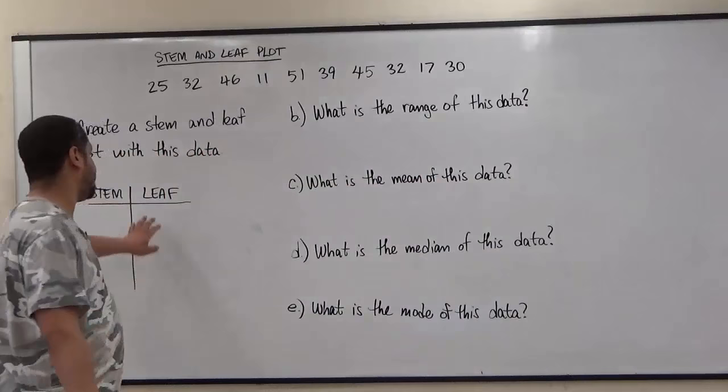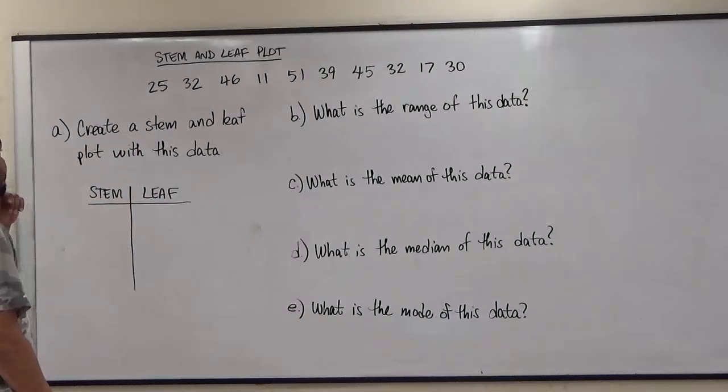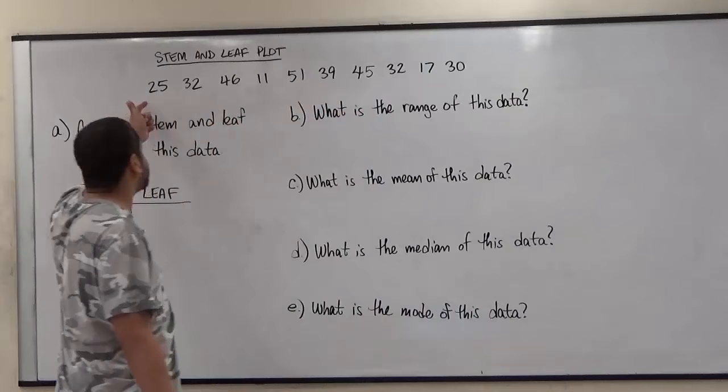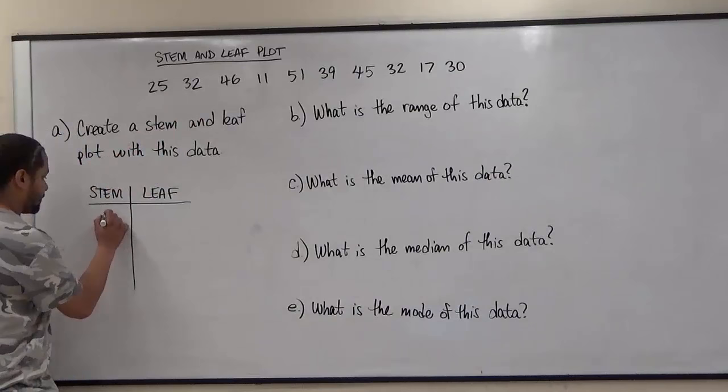So what we're going to do is take account for all the tens place digits here. We see that we have tens, twenties, thirties, forties and fifties, so we should have five stems here. We have one, two, three, four and five.